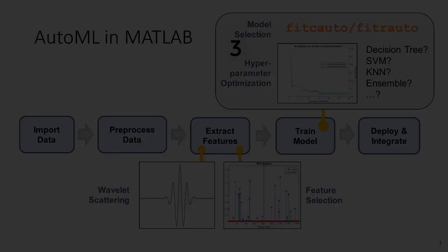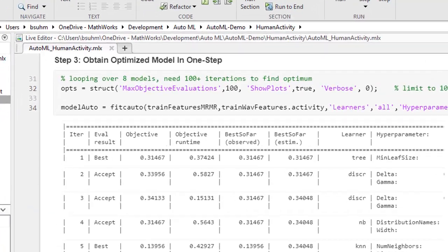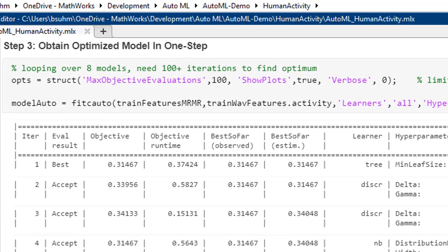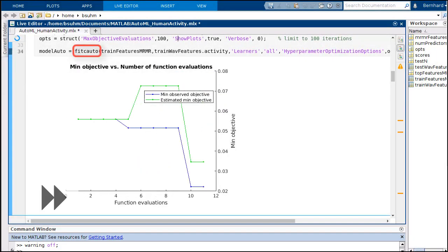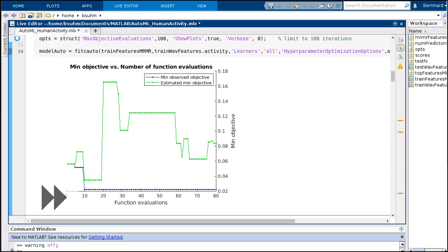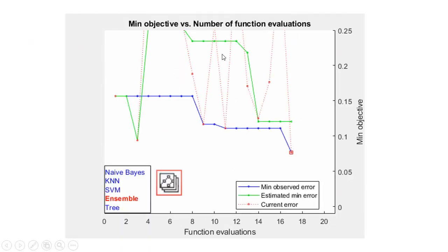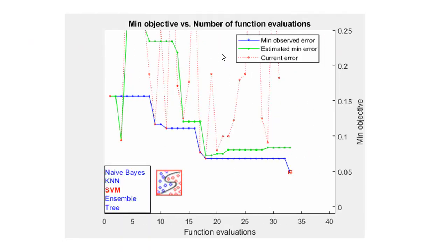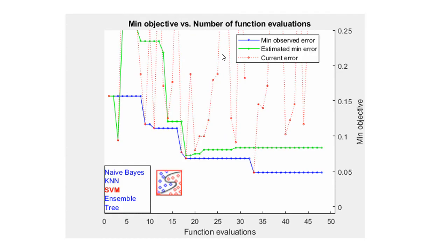we can proceed to the third step, identifying the best performing model. Use Fit C Auto for classification and Fit R Auto for regression. We train on just a dozen features we selected in the previous step. The algorithm evaluates many combinations of models and hyperparameters, seeking to minimize the error.